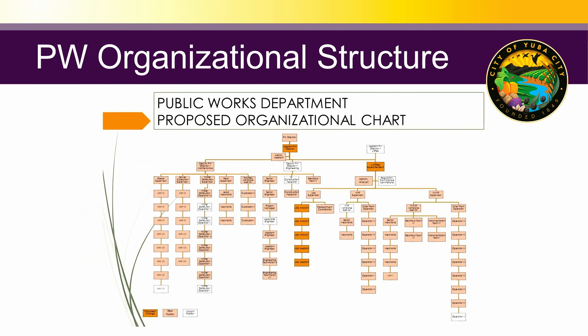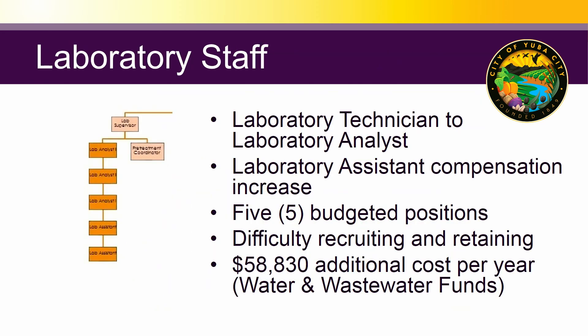Looking at the organizational structure — it's a small structure — you have the utility superintendent position basically overseeing the first-level managers for the utilities divisions: the wastewater and the water treatment plant. Then there's the laboratory analyst and assistant position on one arm, and the assistant public works director position on the other.